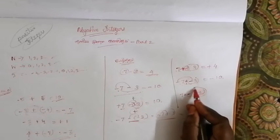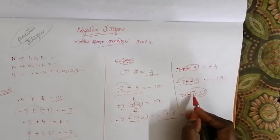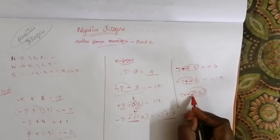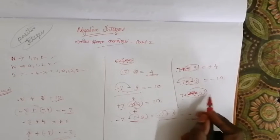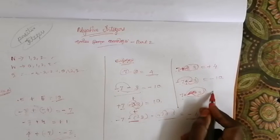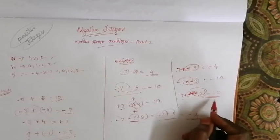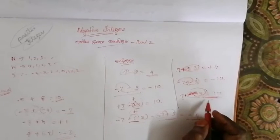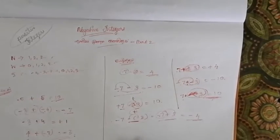Now the number is here. Add minus 3 and save plus 3, then add plus 3 and add plus 3.